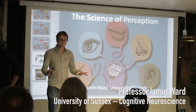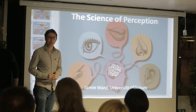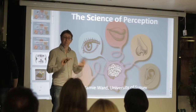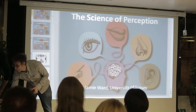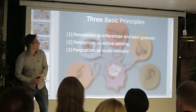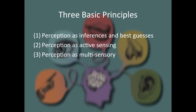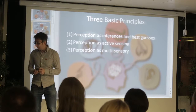Mine is the most boring talk of the boring session, just to kind of lay the groundwork. This is very much the basics of what perception is. I'm going to introduce you to three principles, giving you a few illusions and fun things as we go. The basic principles are that perception involves inferences and guesses about what's out there in the world, that perception is a form of active sensing, and that it's also multisensory.